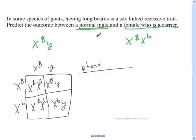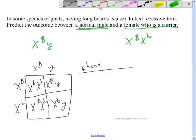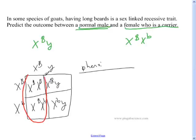Let's look at just the females. These two boxes are female, because they're XX. Capital B, capital B, capital B, lowercase b. In this case, 100% of the females are normal. And I know you may say, well, hey, 50% of them are carriers and 50% of them are normal. They all appear normal. In this case, they all would have short beards, since having long beards is a sex-linked recessive trait.